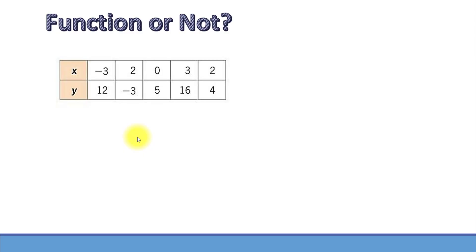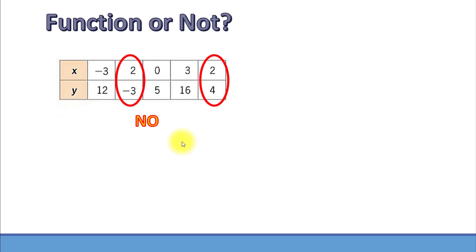Here's our first example. Does this table represent a function? Well, this table does not represent a function. Notice that input 2 has the corresponding output negative 3, and also input 2 has the corresponding output 4. So in other words, one input has two different corresponding outputs, and that's why the relation shown in this table does not represent a function.